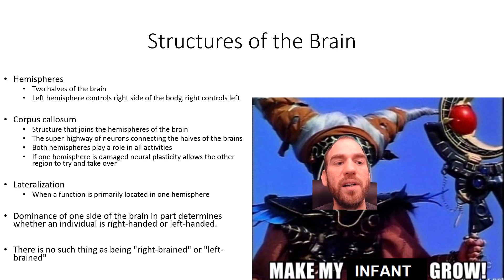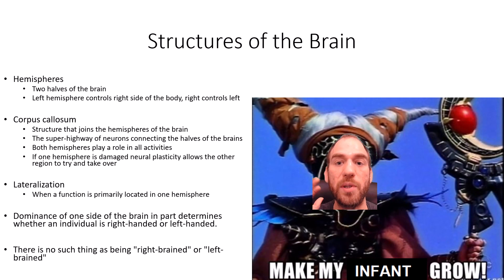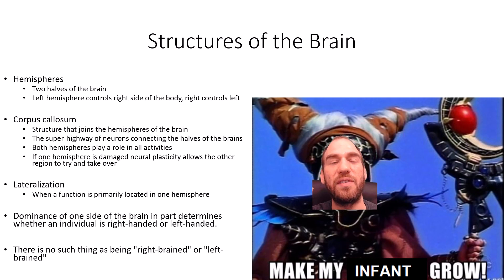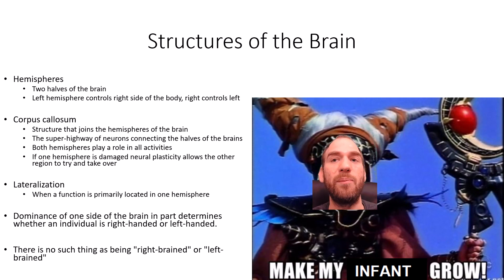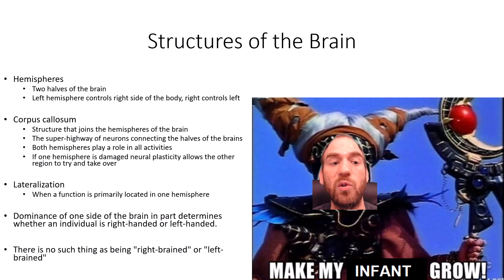Beginning with structures of the brain: the brain has two hemispheres, or two halves. The left hemisphere controls the right side of the body, while the right controls the left — it's opposite. The corpus callosum is a structure that joins the two hemispheres, described as a superhighway of neurons connecting the two halves. Both hemispheres play a role in all activities.